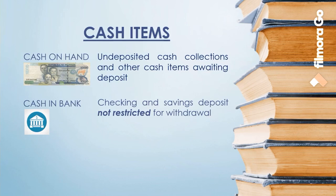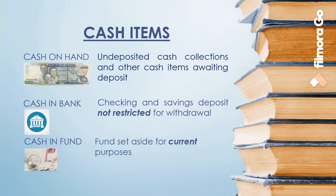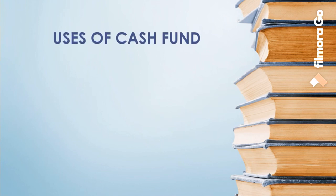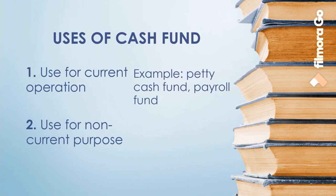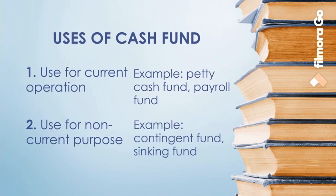Last but not least is cash in fund. There are two uses of cash in fund. The first is used for current operations — these are funds set aside for current purposes, such as petty cash fund, payroll fund, and dividend fund. The second is used for non-current purposes or payment of non-current obligations. This type of fund is presented as a non-current asset or long-term investment. Examples include sinking fund, share redemption fund, contingent fund, insurance fund, and fund for the acquisition of property, plant and equipment. The classification of fund should be parallel to the related liability.